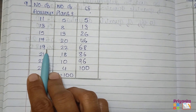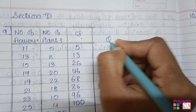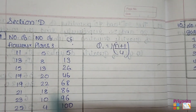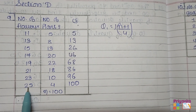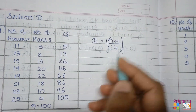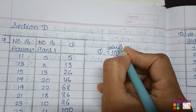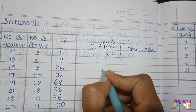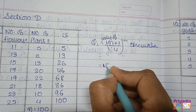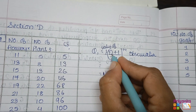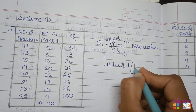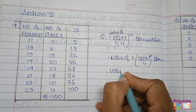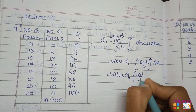Remember, for discrete information our formula to find out the quartile is n plus 1 upon 4 multiplied by j. This formula is used for discrete frequency distribution. Here, the value of the observation — for Q1, j equals 1, and the total number of frequency n is 100. So it becomes the value of 100 plus 1, that is 101, divided by 4 times 1.